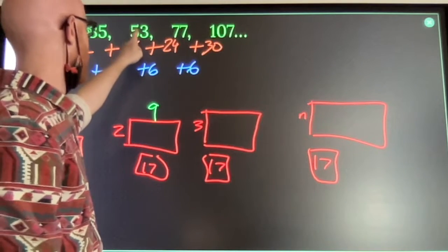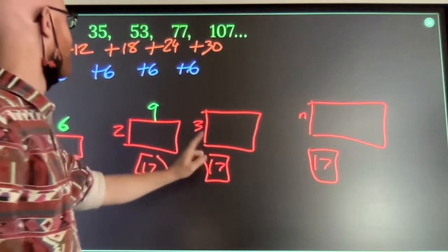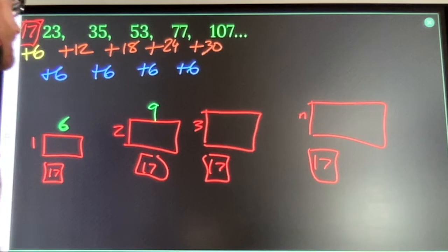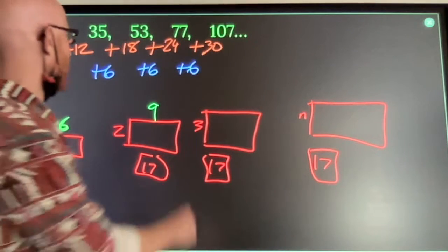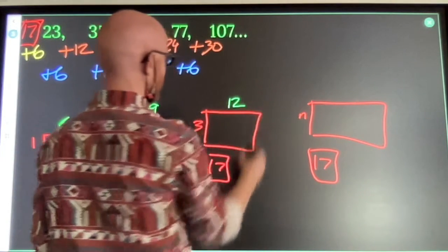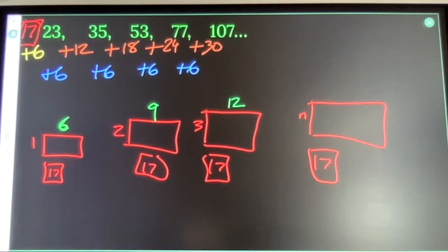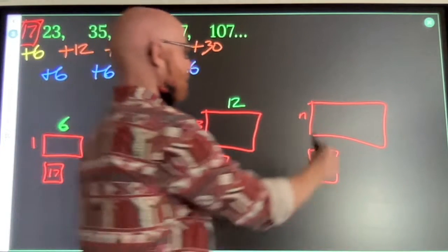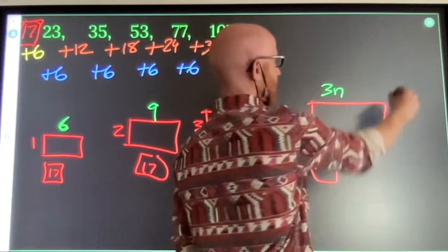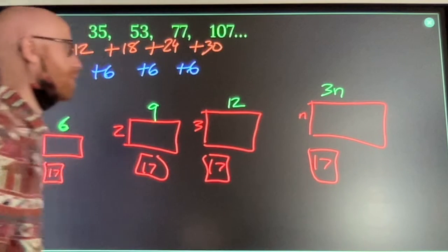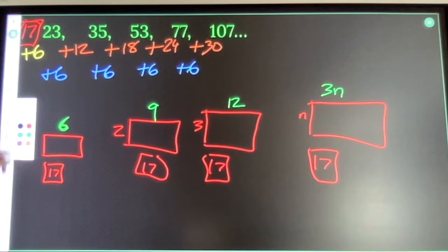I want my third number to be 53. 17 plus 36 will be 53. So I need that to be a 12. Three times 12 is 36. These are counting up by threes.